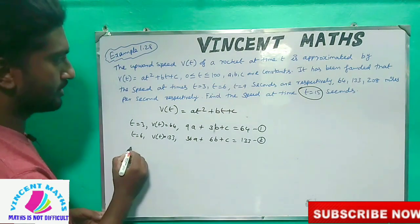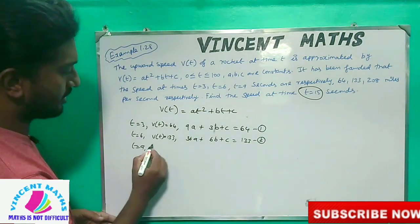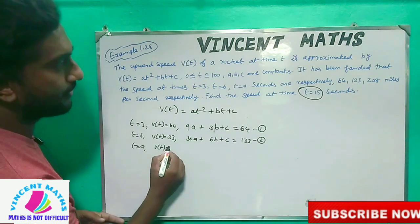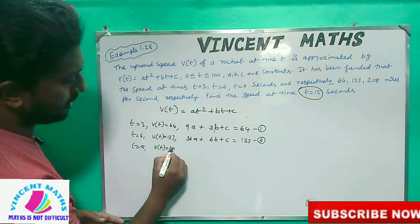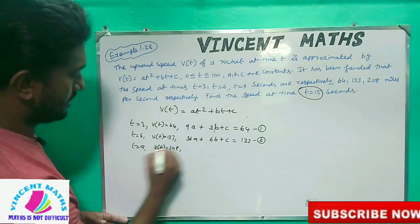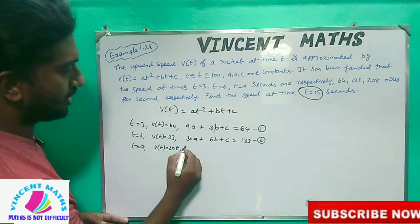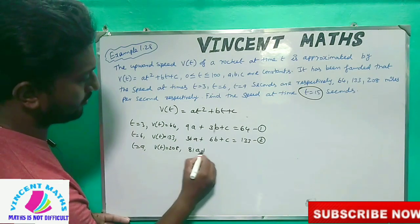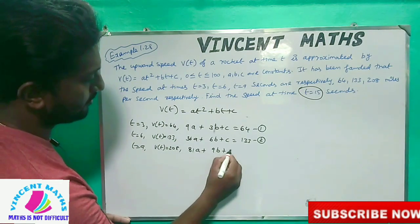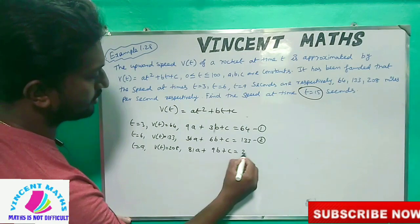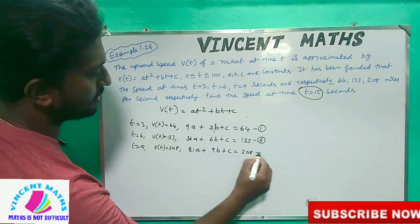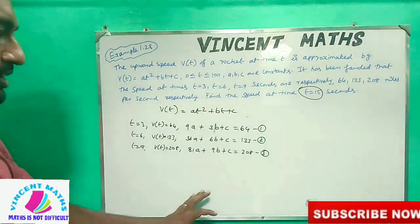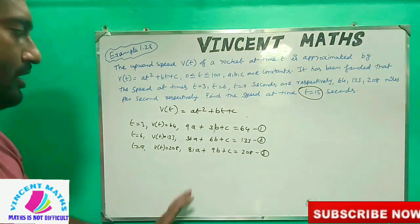And if we have t equals 9 seconds, V(t) equals 208. Then substituting t=9: 9 squared gives 81a plus 9b plus c equals 208. This is equation 3.